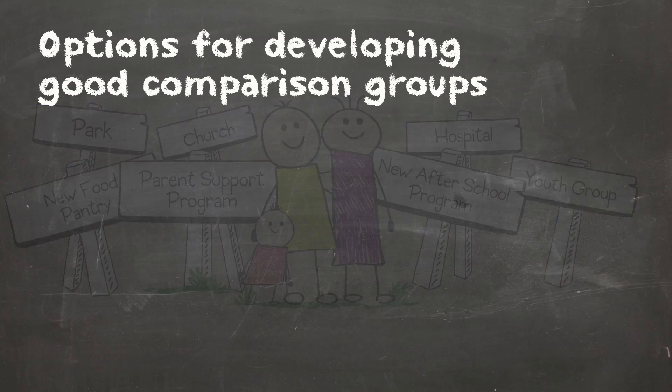There are several approaches to developing good comparison groups — here are four of them. The first option is a randomized controlled trial design, or RCT for short, which is generally regarded as the strongest approach to building a comparison group.